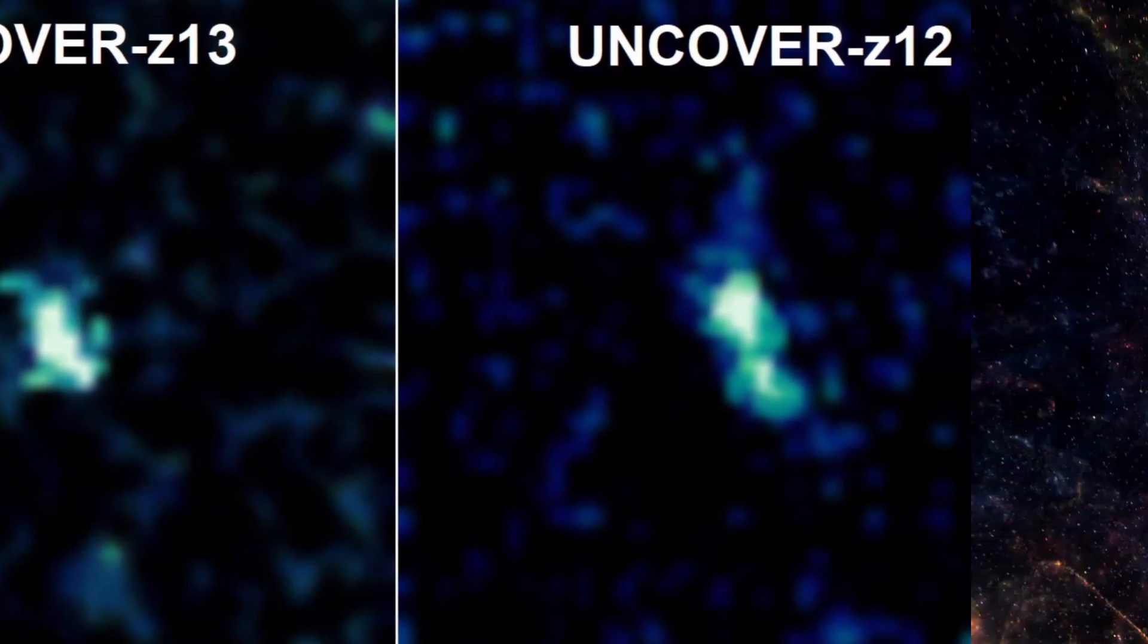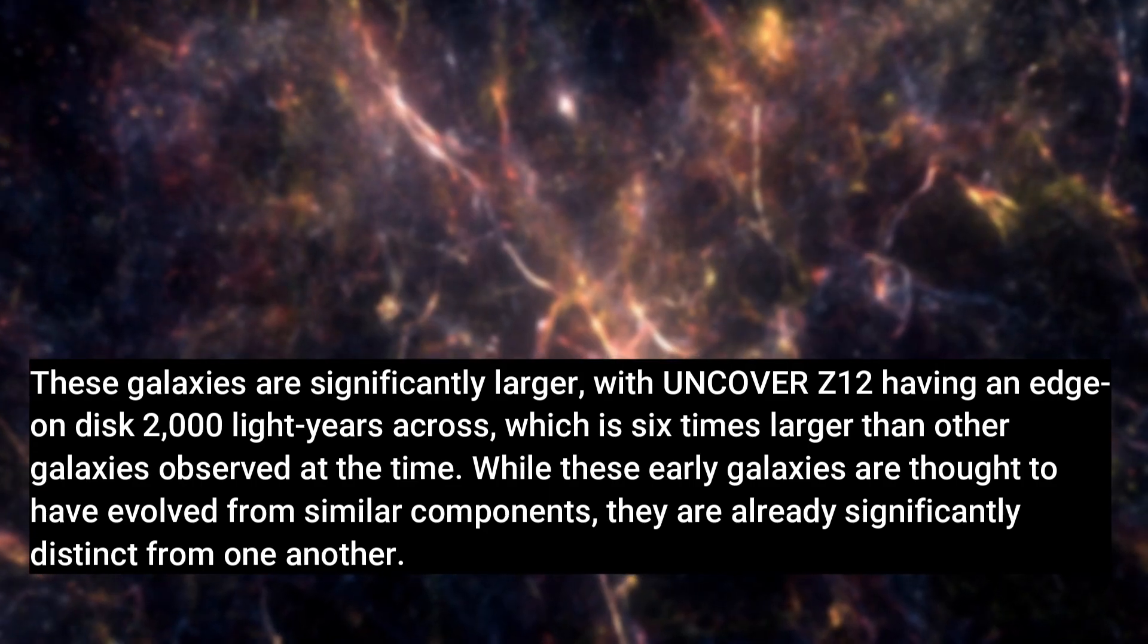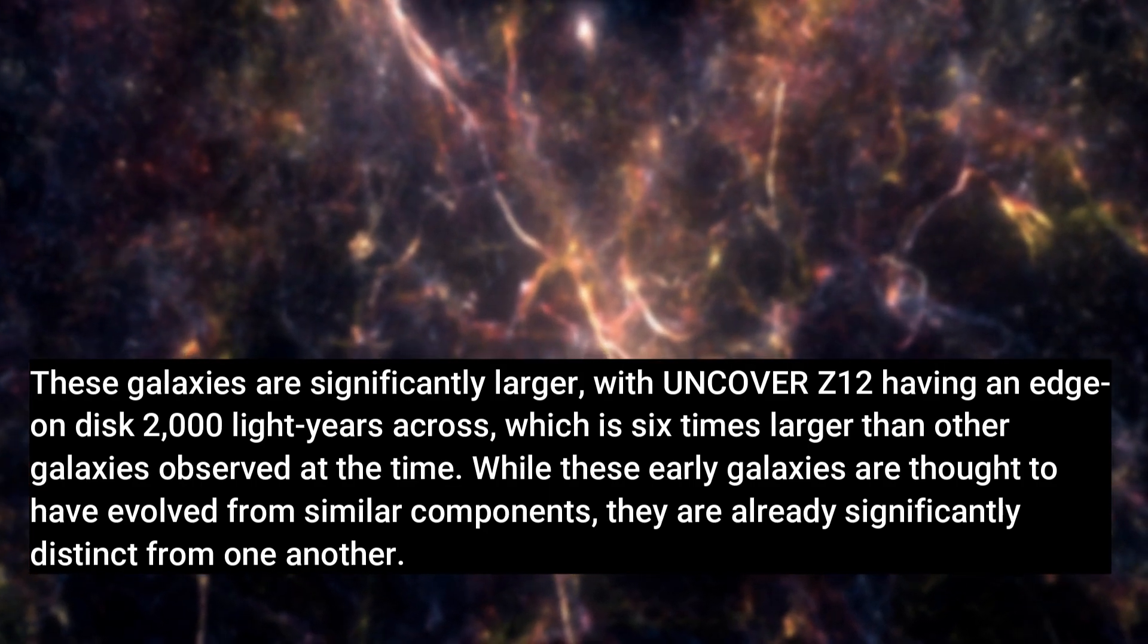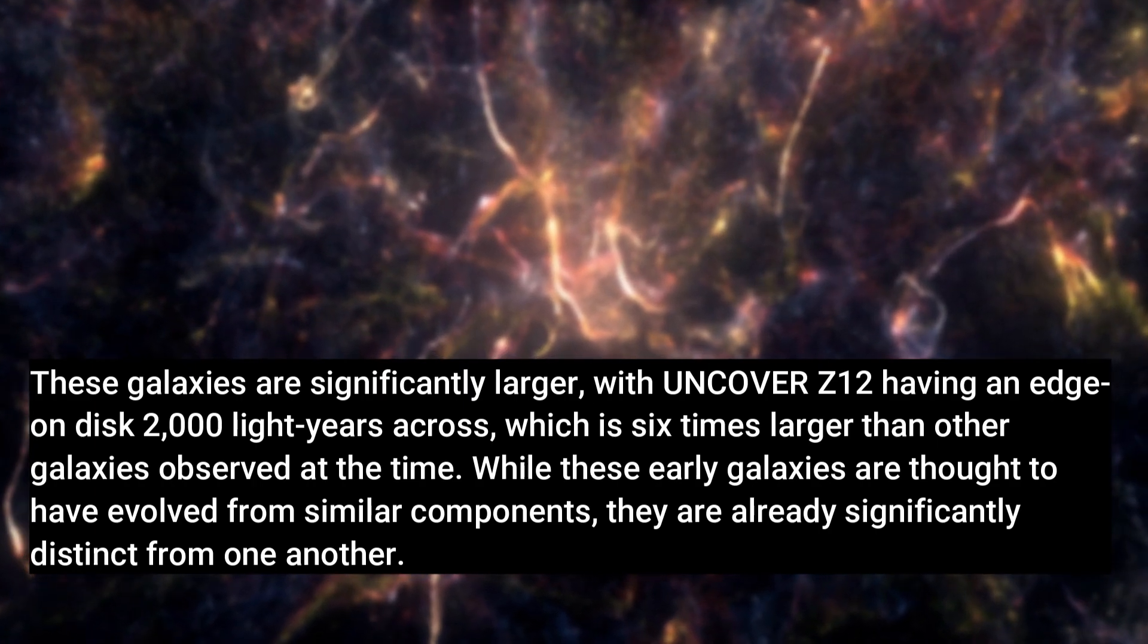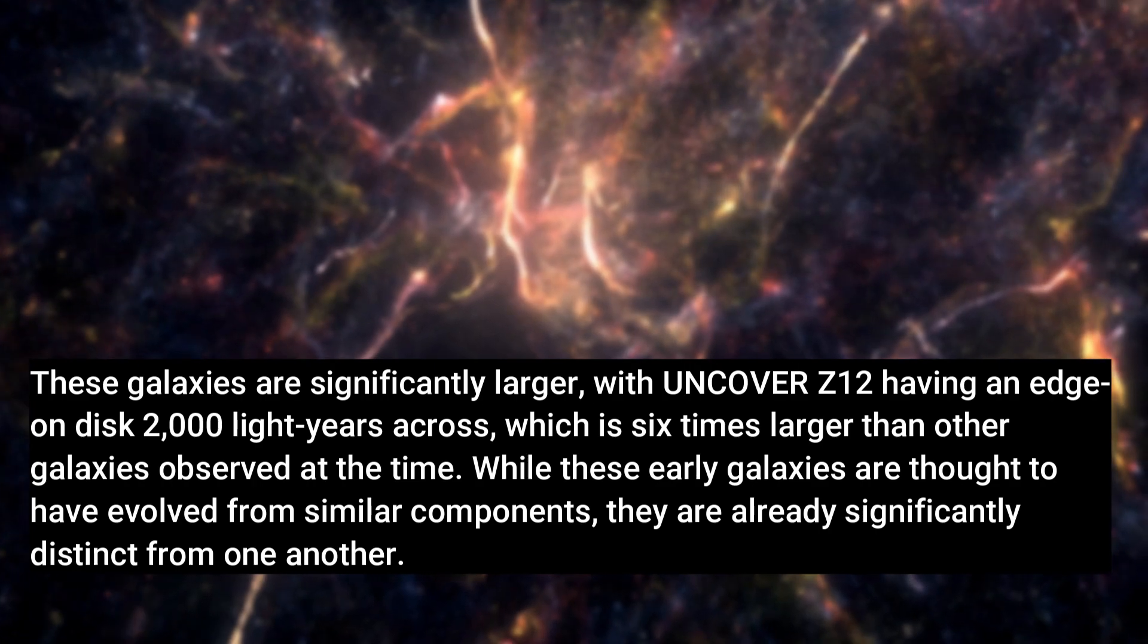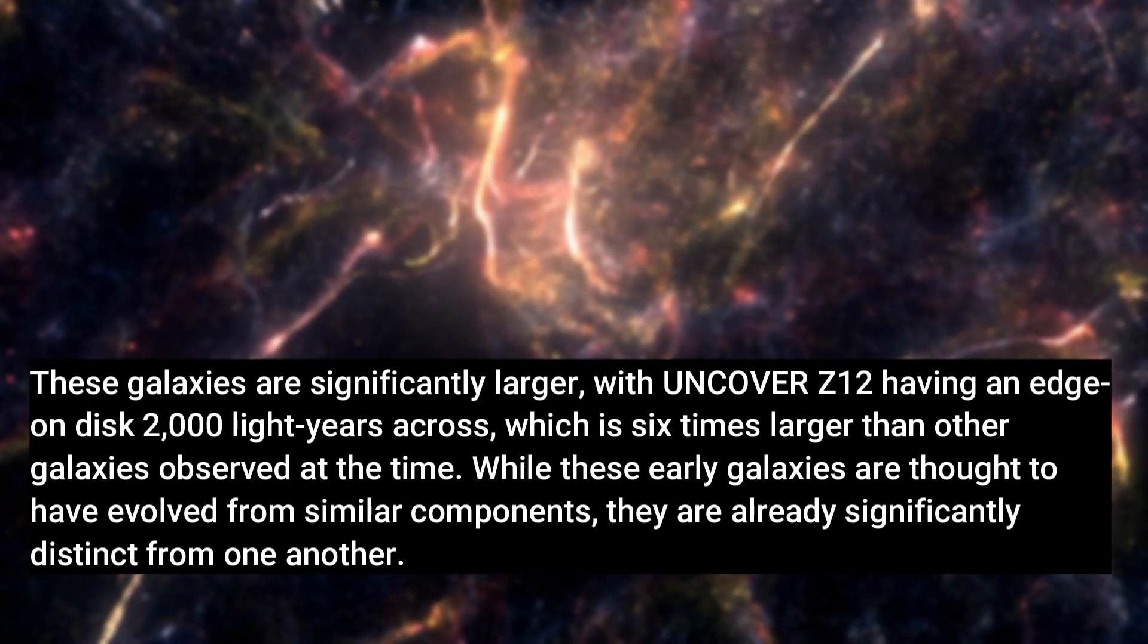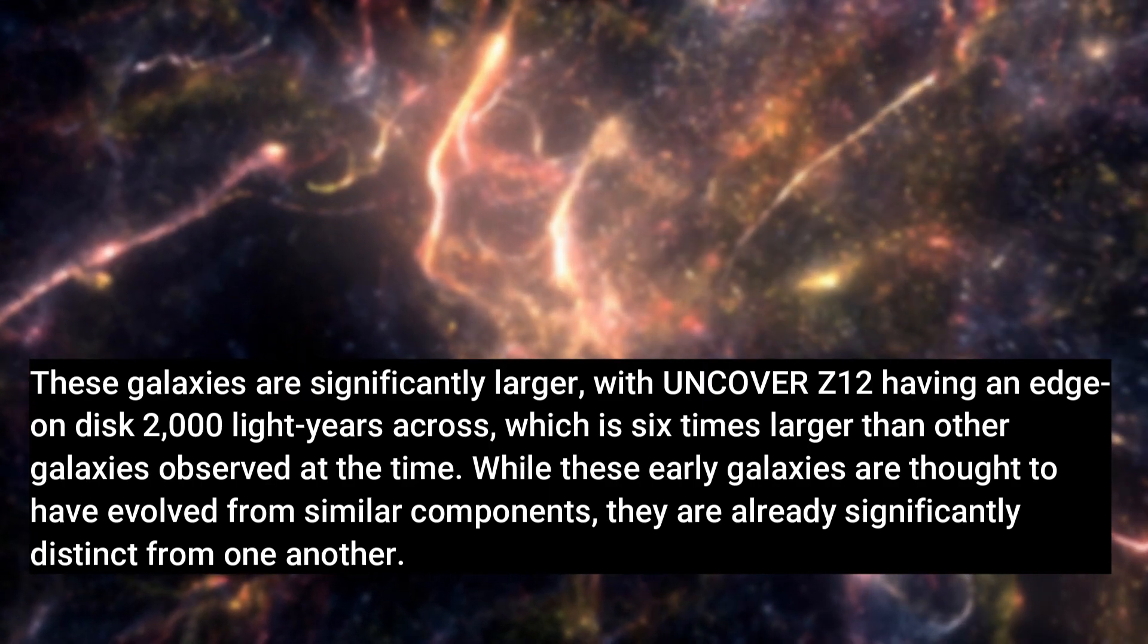But it isn't all. These galaxies are significantly larger, with Uncover Z-12 having an edge-on disk 2,000 light-years across, which is six times larger than other galaxies observed at the time. While these early galaxies are thought to have evolved from similar components, they are already significantly distinct from one another.